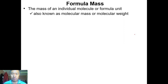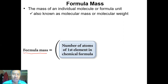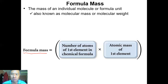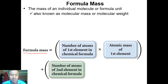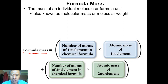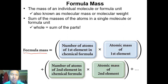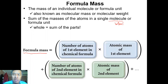This is the lecture for Chapter 3, Part 2. We're going to study the formula mass — the mass of an individual molecule or formula unit, also known as molecular mass or molecular weight. The formula to calculate the formula mass is: the number of atoms of each element multiplied by the atomic mass of that element, summed together. It is the sum of the masses of atoms in a single molecule or formula unit.